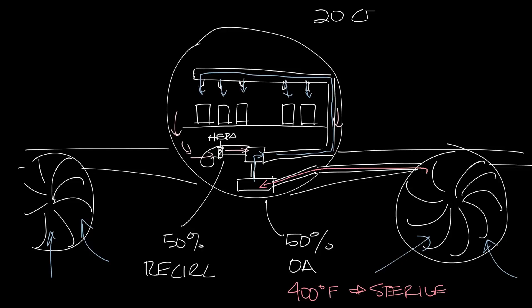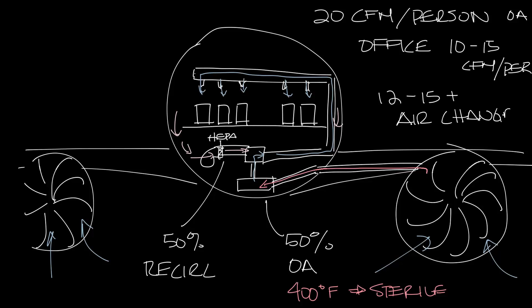ASHRAE 161 requires about 20 CFM per person of outside air on an airplane. So if you compare that to the 10 or 15 CFM per person in an office, you could actually be getting more fresh air on an airplane. Airplanes also have 12 to 15 or maybe more air changes an hour. So the recirculated air is filtered pretty frequently during the flight.